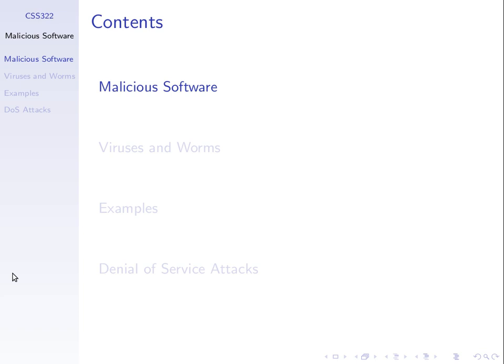First, we want to talk about and classify different types of malicious software. Some of the terminology you've heard before, some you know about, some you may not be clear on. We'll go through different terminology, then go through the basics of a virus and a worm and a few examples, and then finish with denial-of-service attacks. Note that this topic from the textbook is not in the hardcopy but is online — there's a PDF document for this chapter. It has more examples that we won't get time to go through.